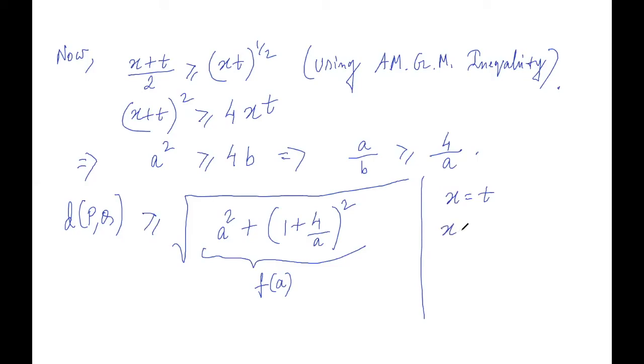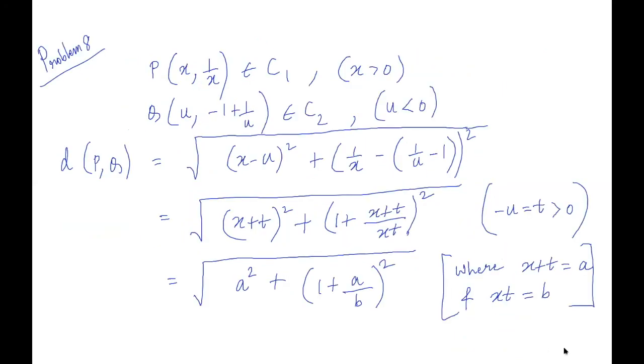And you know that x plus t equals a. And so 2x will be equals to a and x will be a/2. And as well as t will be a/2. But t is nothing but the negative of u. So u will be negative a/2. So now you see that since our a was uniquely determined, so we have unique x and unique u for which the minimum occurs. And you have unique points P and Q, where x and u are unique. So P and Q are unique in C1 and C2 respectively.